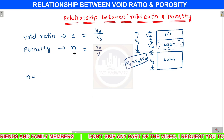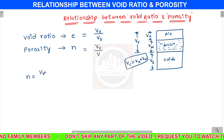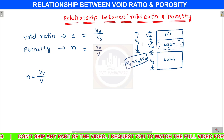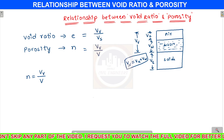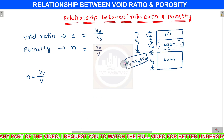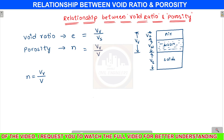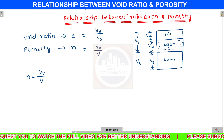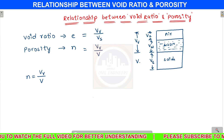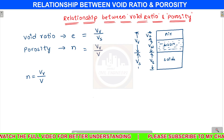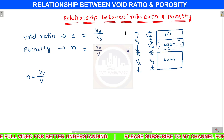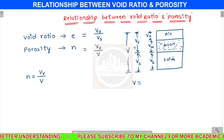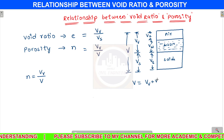Now, porosity n equals volume of voids divided by total volume. Volume of voids equals volume of air plus volume of water. Total volume equals volume of voids plus volume of solids.